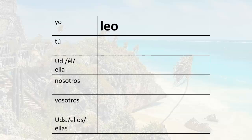So this is our root, and for yo we just add the ending. So we have yo leo. Remember this means I read, I do read, or I am reading. Then we have our root and we add the ES ending: tú lees. Notice that these are two separate syllables, so you have to pronounce each one separately — lees. Tú lees.